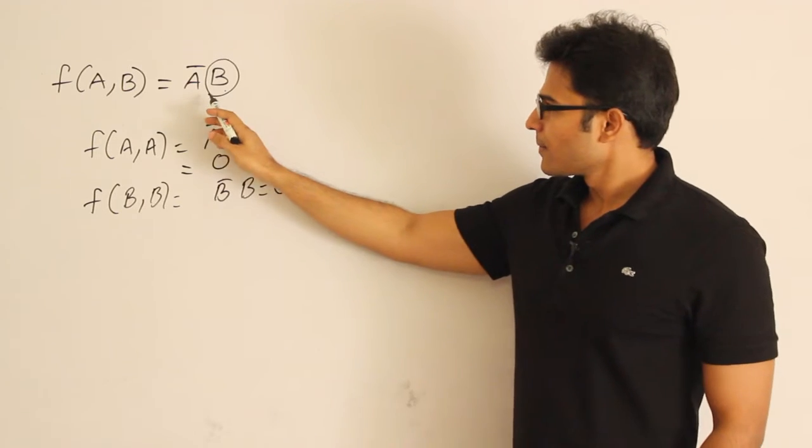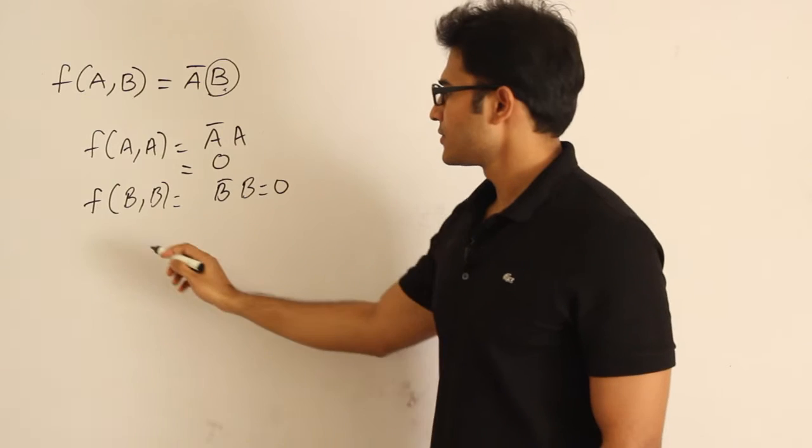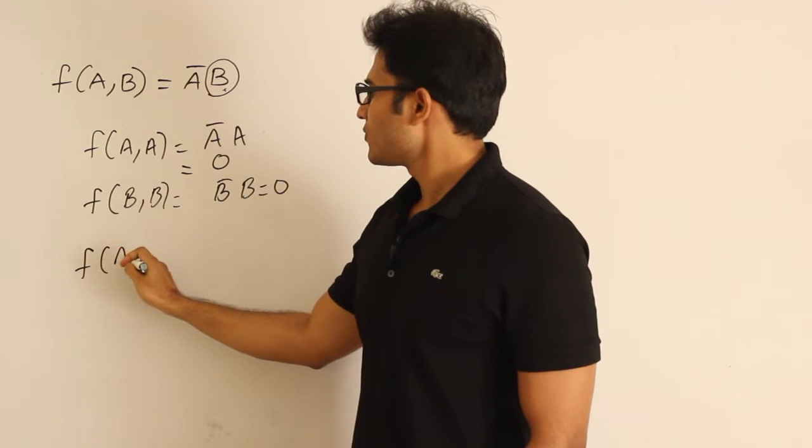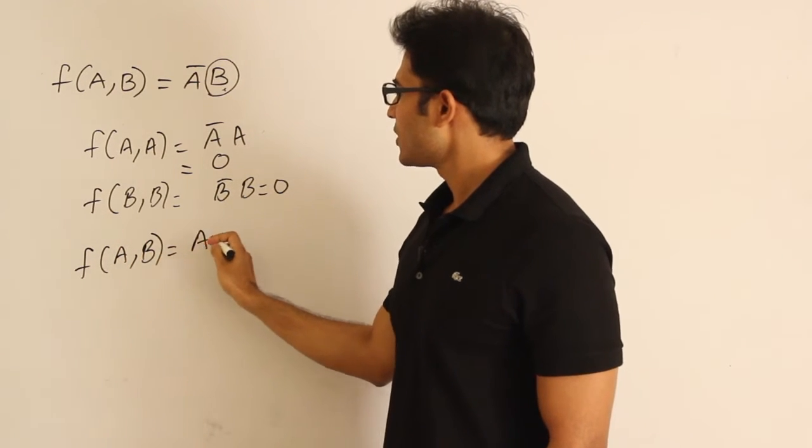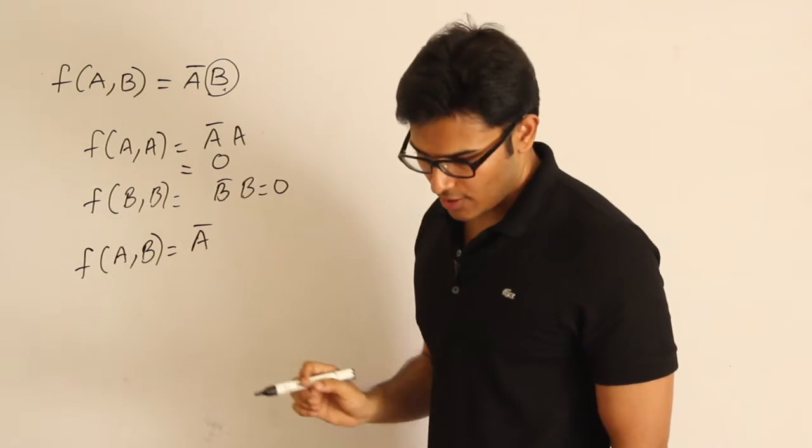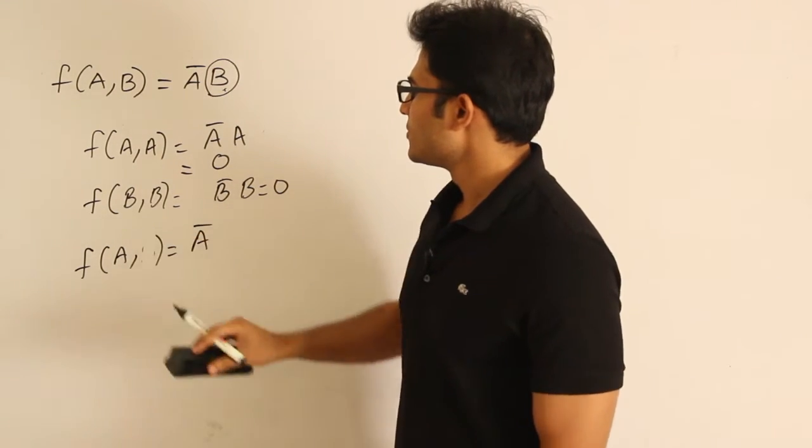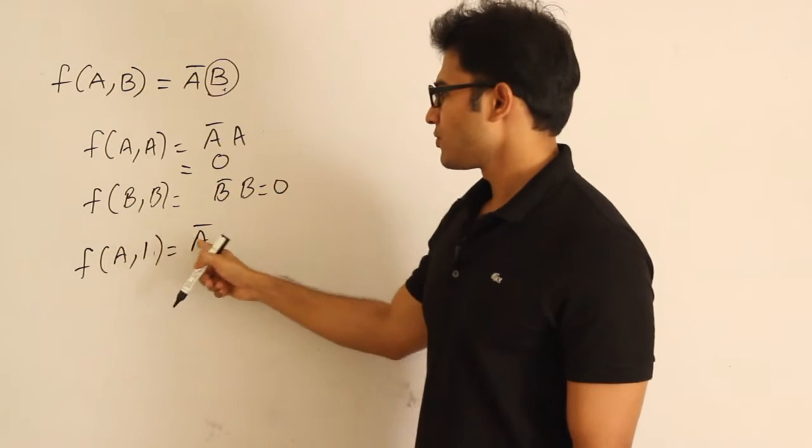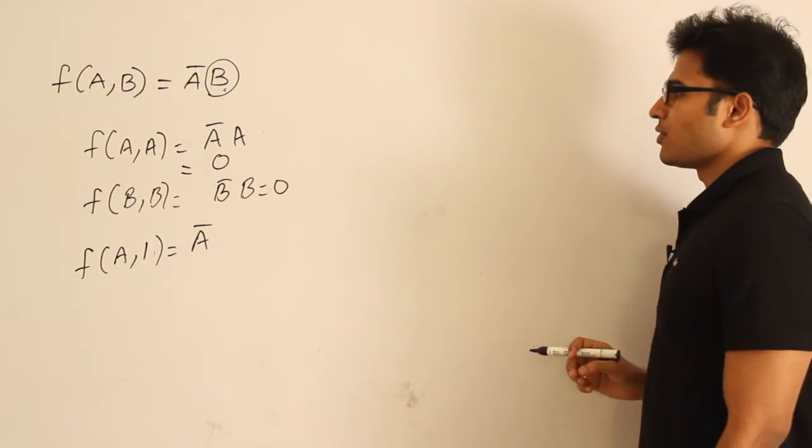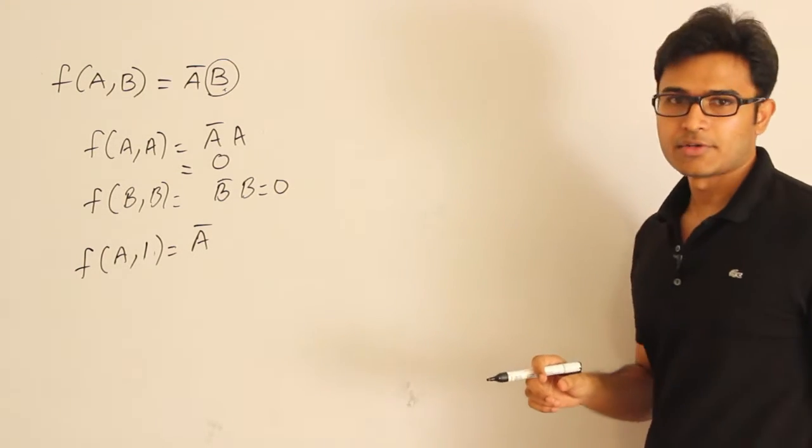Now if I put in place of b a 1, then what I get is f(a,b) equal to a complement. Sorry, f(a,1), which means in place of b I am putting 1. In place of b if I put 1, then I get f(a,1) equal to a complement. So what do you understand from that? We are able to get the complementation.